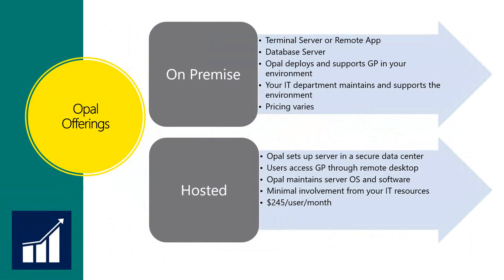Opal's common deployments are either on-premise or hosted. In an on-premise deployment, Opal can provide all the components necessary, including server hardware, operating systems, SQL Server, and Microsoft Dynamics GP software. Another option is hosted, where Opal will host Dynamics GP for you. We'll take care of setting your server up in a secure data center, performing annual GP upgrades, and providing day-to-day end user support. This deployment option requires very minimal participation from your IT department and is great for growing companies or those who don't want to maintain in-house servers. Packages start at $245 per month per user, depending on functionality. Note that some restrictions do apply to included support.